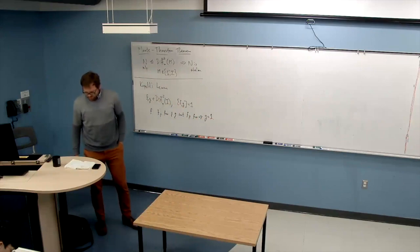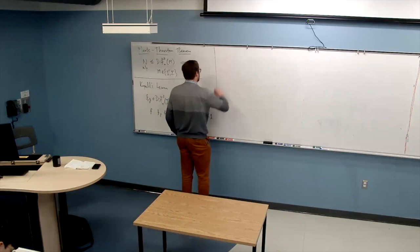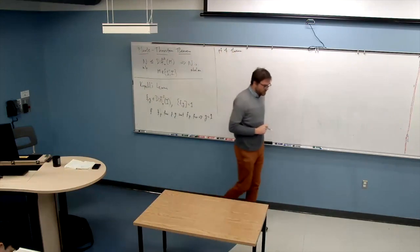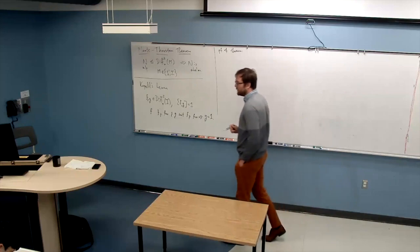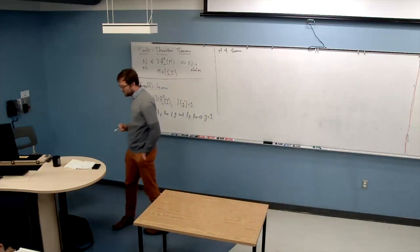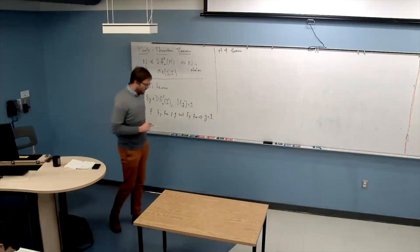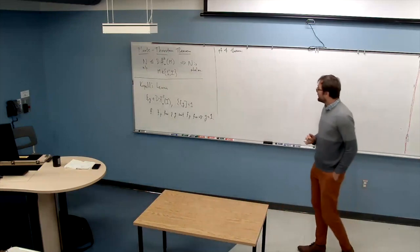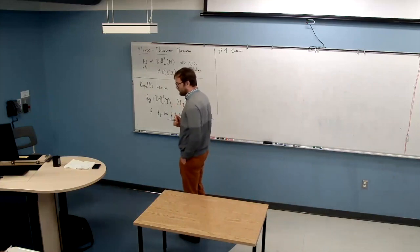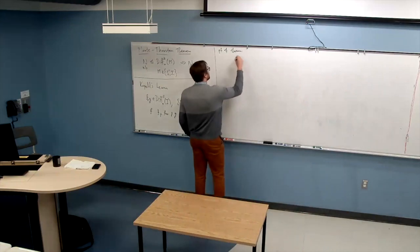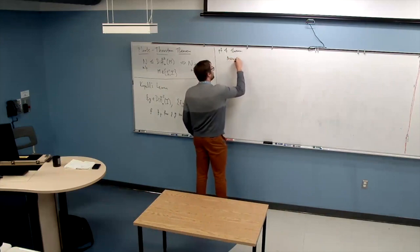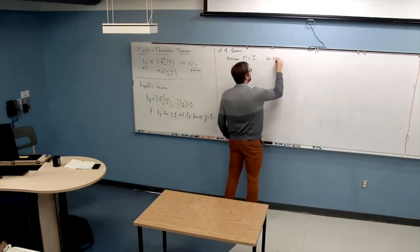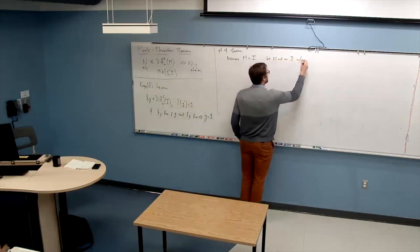Let's proceed to the proof of the theorem. We'll break it up into two cases: one where M is the interval, and then treat the circle separately. The circle has some ideas connecting to non-trivial analysis. So assume M equals I, and let N act on I without a global fixed point.